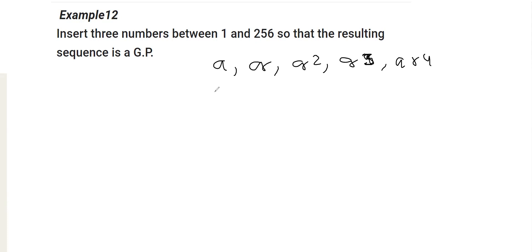Now, first term is given as 1 and the last being 256. So, clearly we can equate this, right? We can equate A as with 1 and that as AR raised to the power 5 as 256.